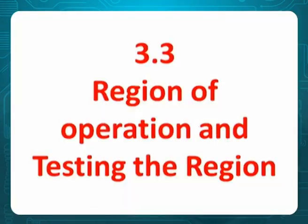Let us talk about region of operation and testing the region. Where a transistor operates decides what operation it performs. For example, in saturation it is a switch, in cutoff it is also a switch, in the active region it is an amplifier. So we will be really talking about testing the region of operation.